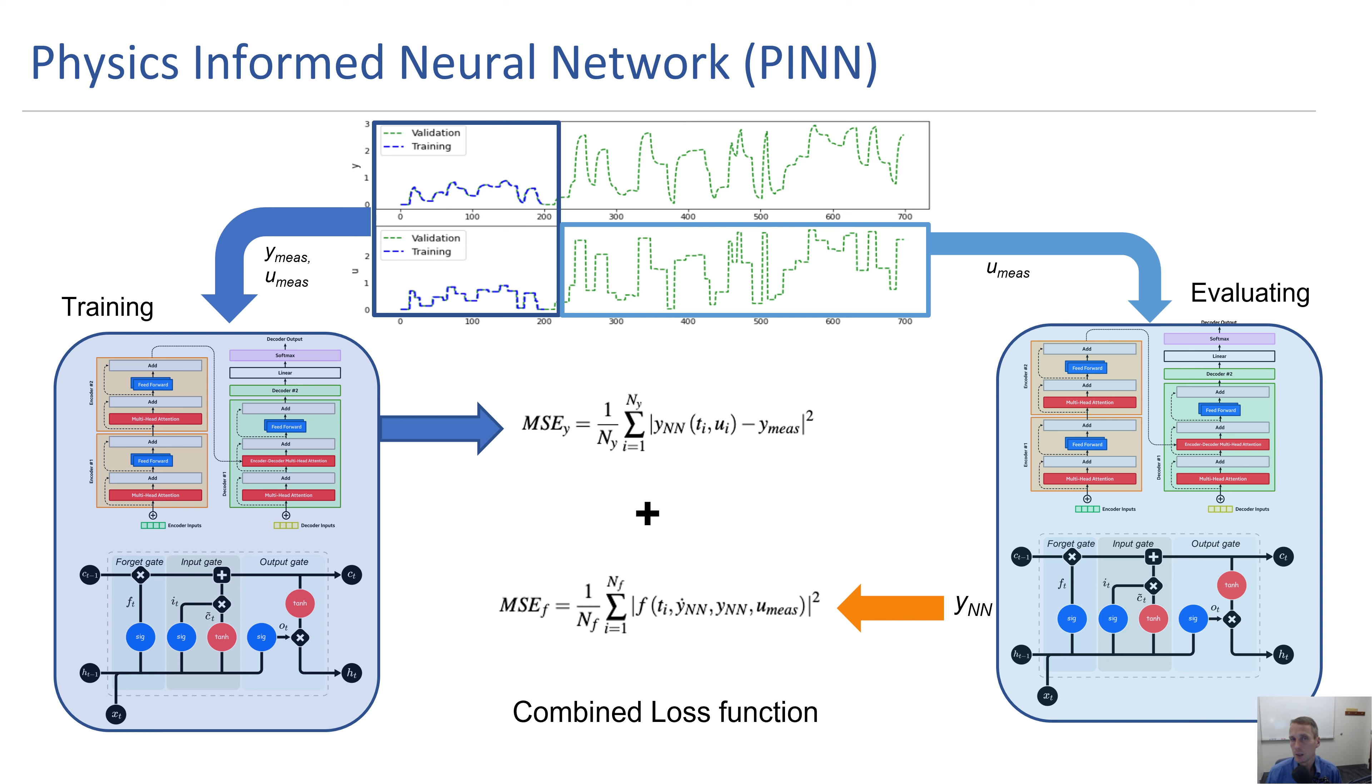We're also going to see more physics-informed machine learning or physics-informed neural networks where the objective might be to minimize the mean squared error but also from the equations of a physics-based model where we combine these into a unified model and do the fitting simultaneously. These new architectures are going to emerge to allow us to use the right type of information whether that comes from data, equations, or a combination of the two.